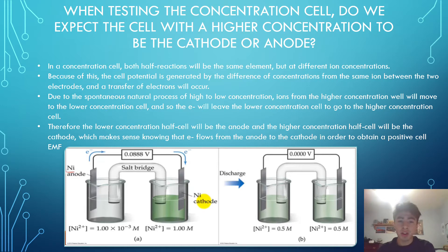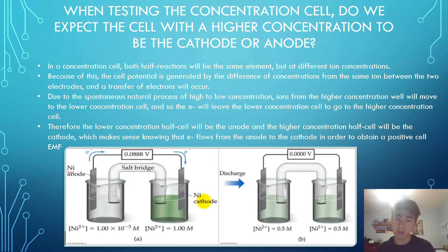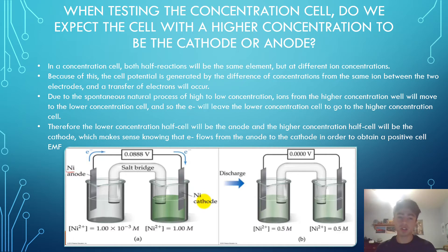This is because of a spontaneous natural process that we all know of, where things of higher concentration move to lower concentration to even things out and maintain a balance. So in the case of the concentration cell, ions from a higher concentration cell will move to the lower concentration cell, meaning that electrons will leave the lower concentration cell to go to the higher concentration cell.